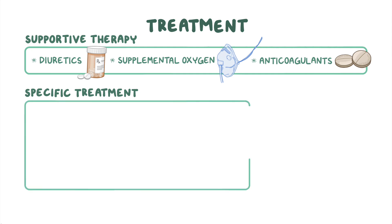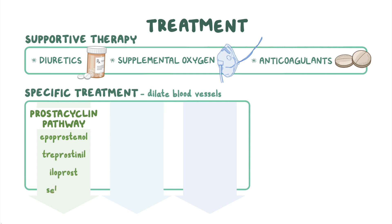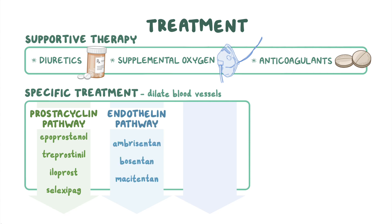Specific treatment of PAH is done with medications that dilate blood vessels by broadly targeting three pathways known to be important in PAH. The first is the prostacyclin pathway, and medications in this class are epoprostenol, treprostinil, iloprost, and selexipag. The second is the endothelin pathway, with drugs such as ambrisentan, bosentan, and macitentan. Lastly, there is the nitric oxide pathway that includes sildenafil, tadalafil, and riociguat.